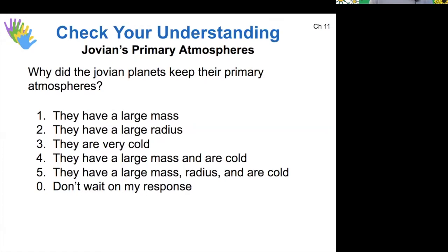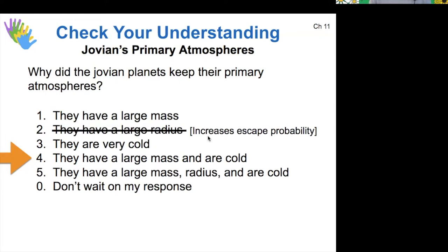The colder a planet is, the more likely the gases are to stick around and stay in the atmosphere. So both the mass and the cold nature of these planets are important. Their equilibrium temperatures are low because they're very far from the sun. Interestingly, a large radius would actually increase the probability that a gas would escape — in our escape velocity formula, the radius is in the denominator, so a larger radius makes for a lower escape speed. So you want large mass and cold temperatures, but not necessarily large radius.